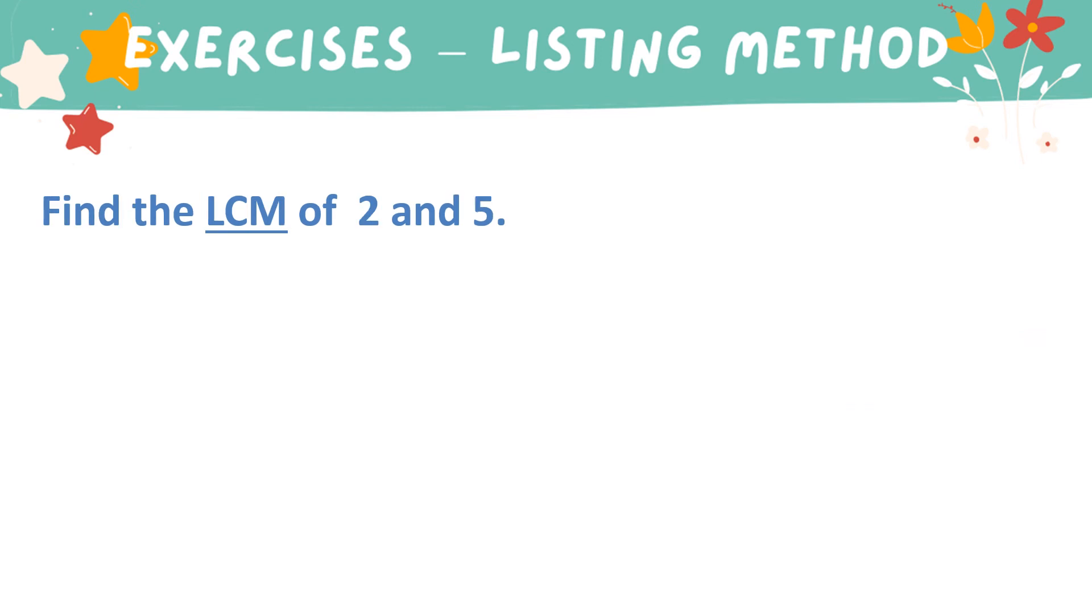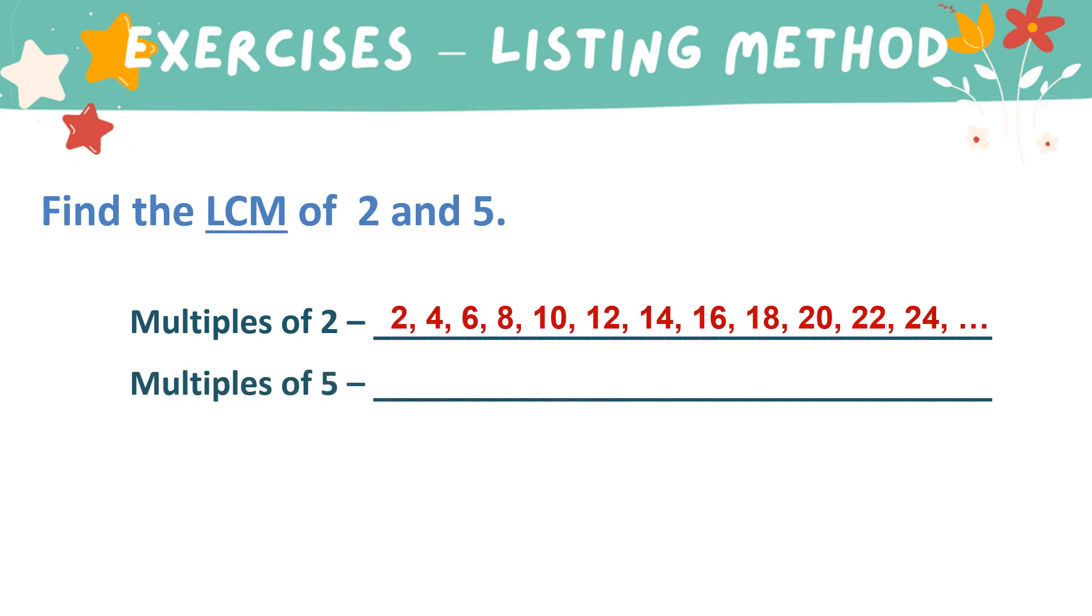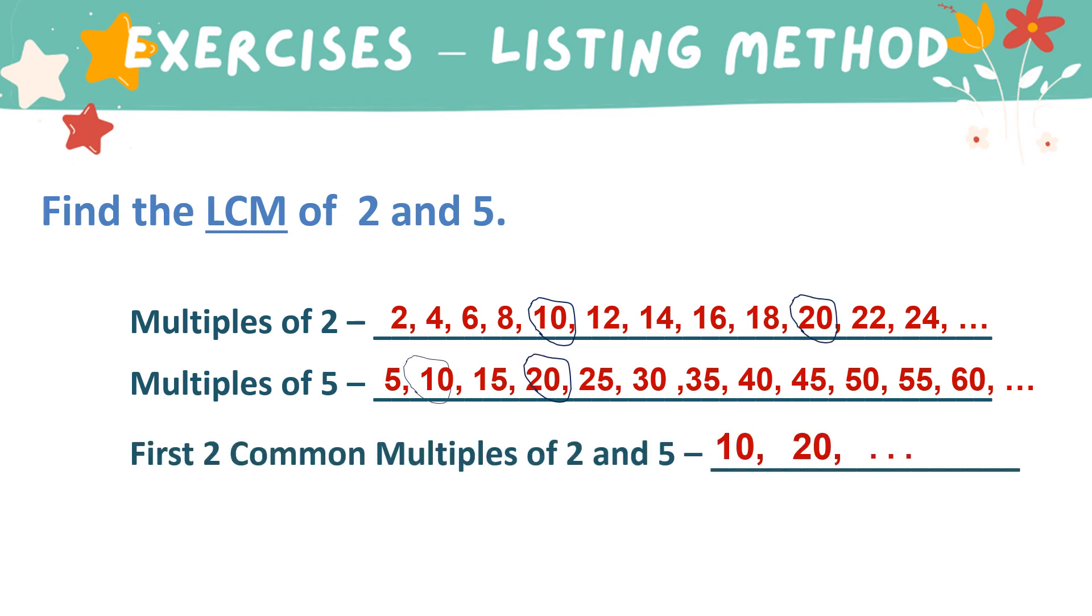Next, find the LCM of 2 and 5. These are the multiples of 2. And these are the multiples of 5. These are also the common multiples of 2 and 5. We have 10 and 20. Based on the list, there are only 2. We have 10 and 20, but there are still more. Between the two, the least is 10.